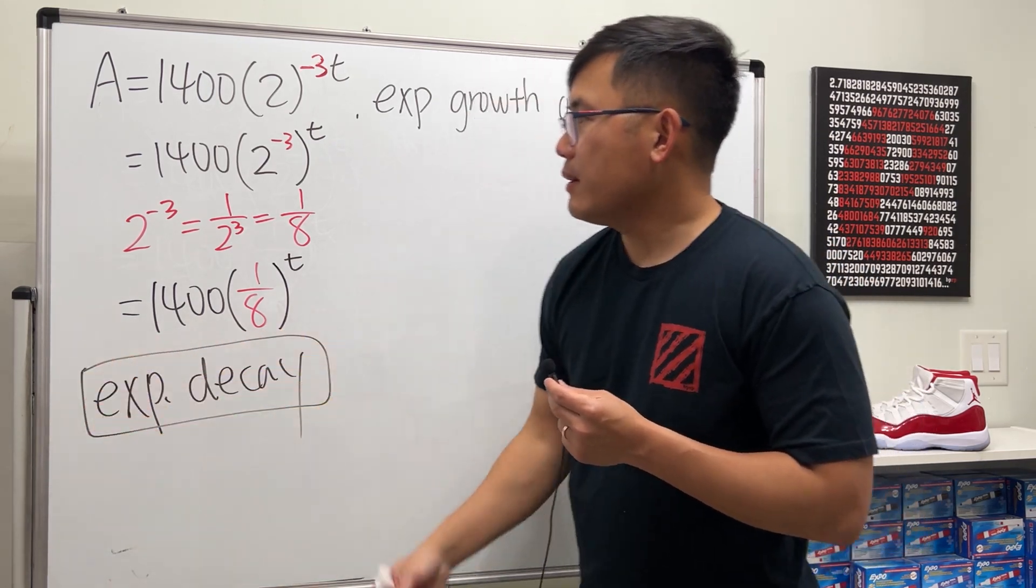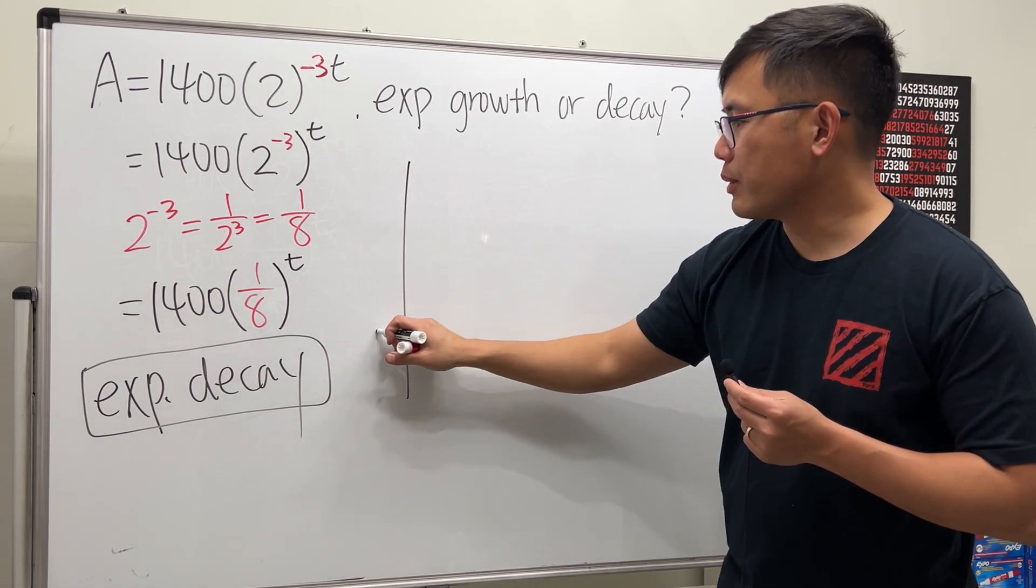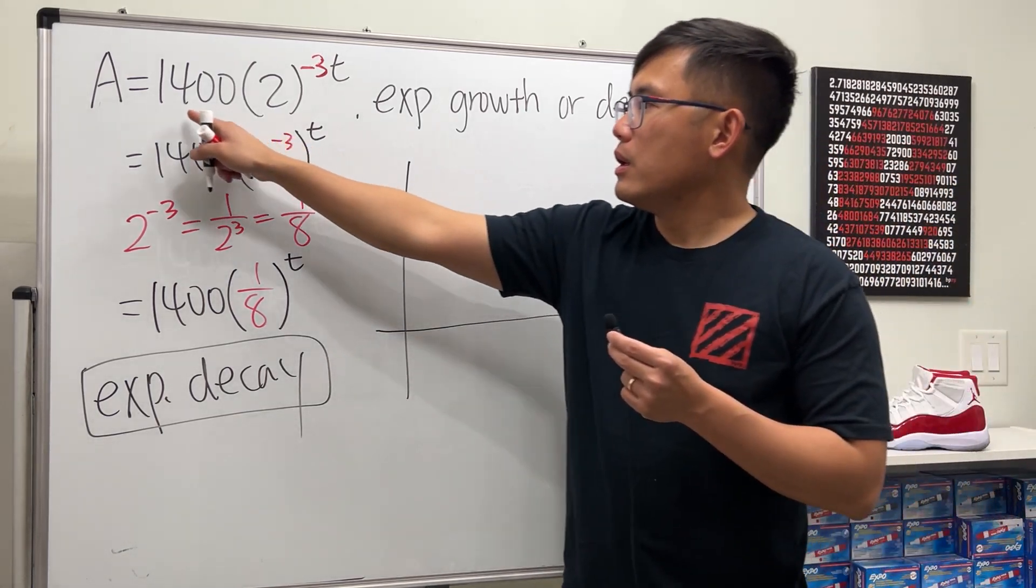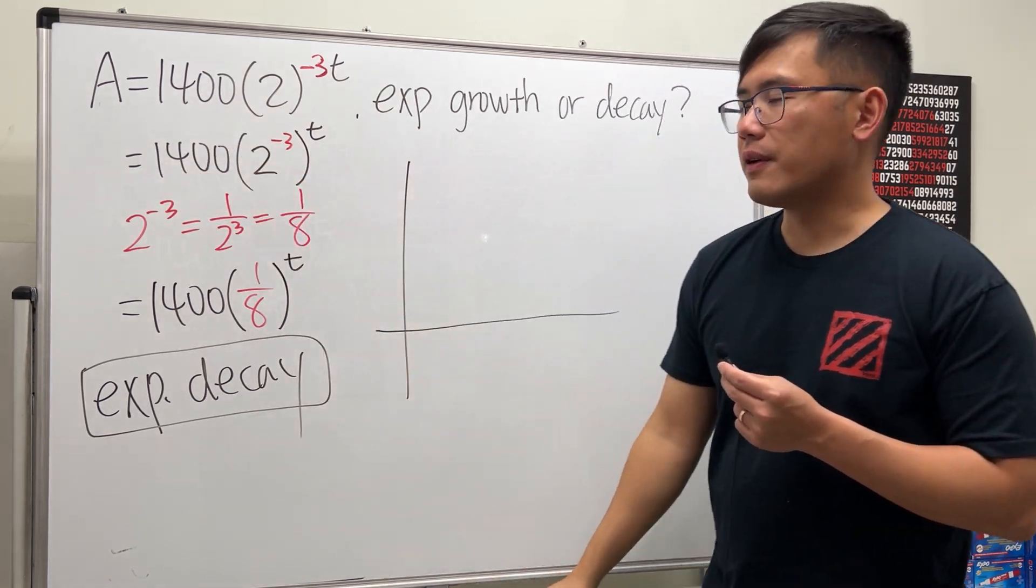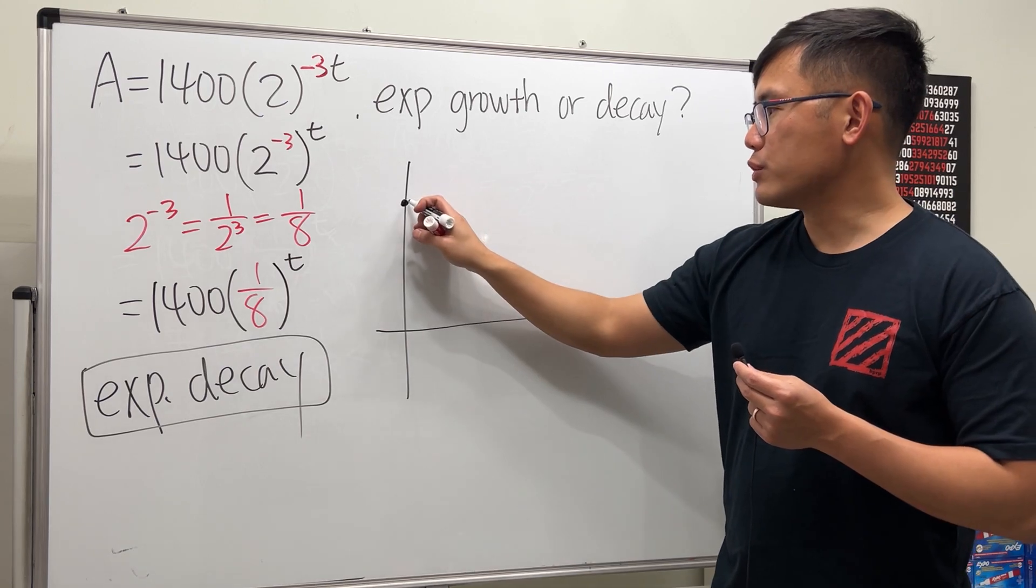Now let me sketch a graph for you guys real quick. When we have exponential decay, this right here is the starting value - that's 1400, somewhere here - and the graph will look like this.